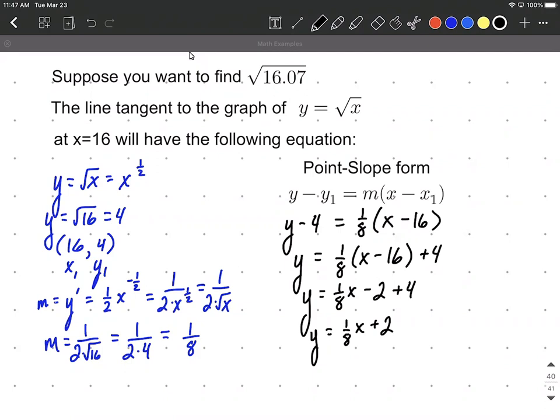So that's going to be what we'll use to approximate this. You can also say this is going to be the approximation: one-eighth times x plus 2, as long as our x values are very close to 16. Because we remember, we did use an x value of 16 strategically, because we wanted to approximate the square root of 16.07. So substituting that in, we can do one-eighth times 16.07 plus 2, which is going to be equal to 4.00875.